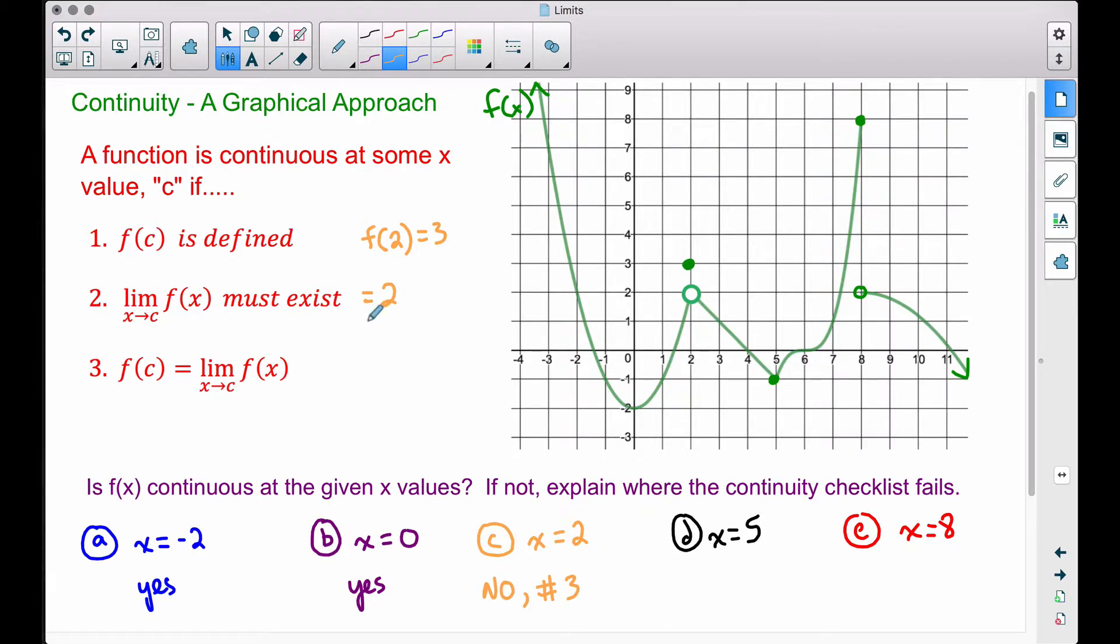Number two, does the limit exist? Good. Number three, are those two things that we just addressed equal to each other? And if all three of these things are true, then your function is continuous. If one of these is not true, your function is not continuous at that particular x value that we can call c.